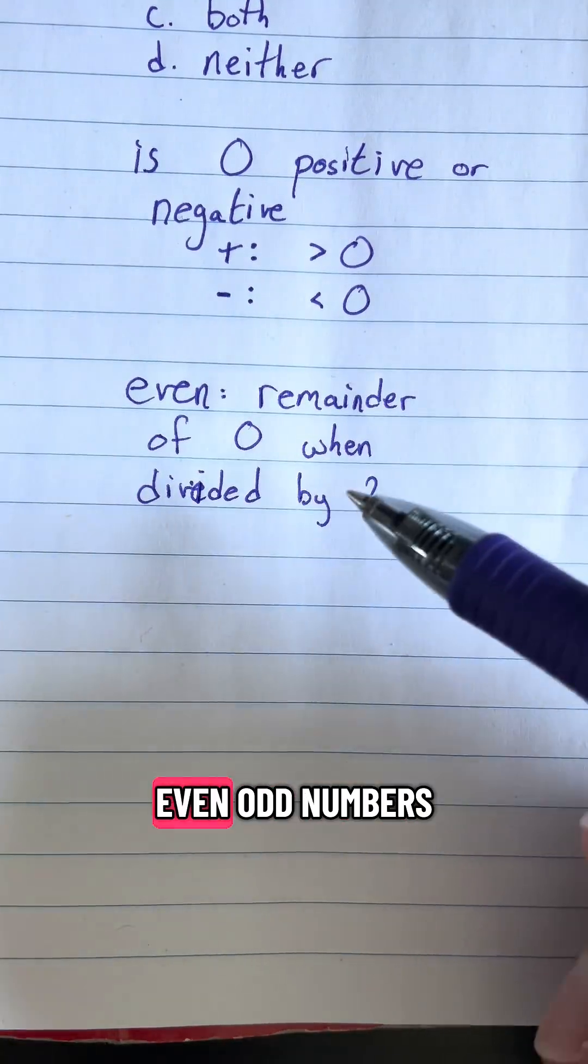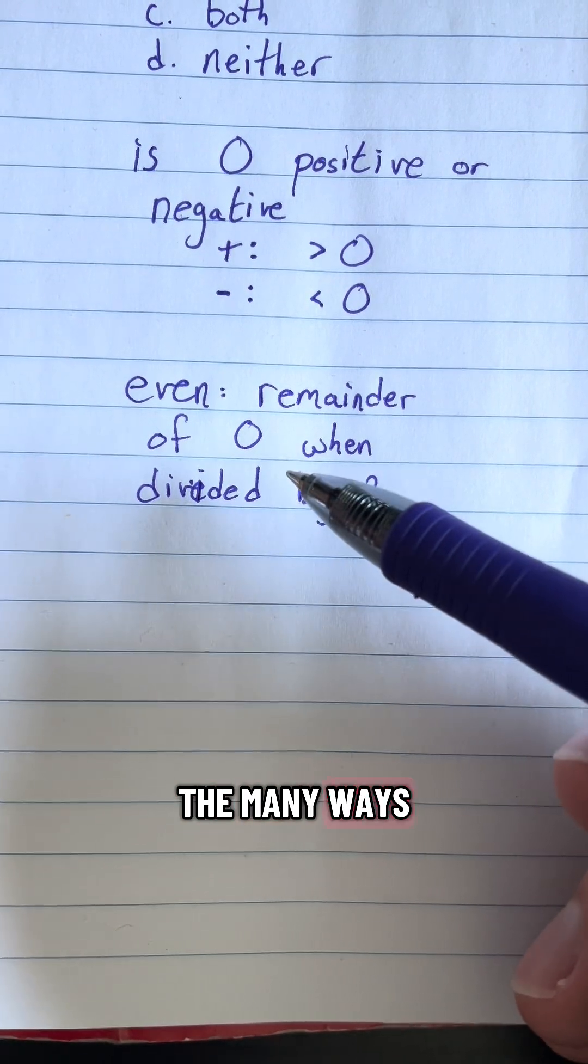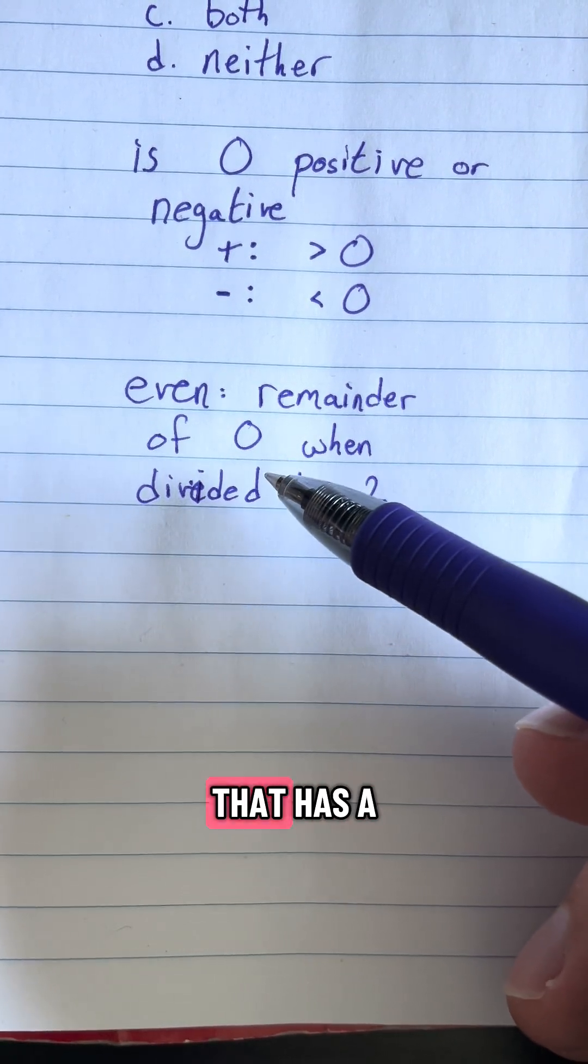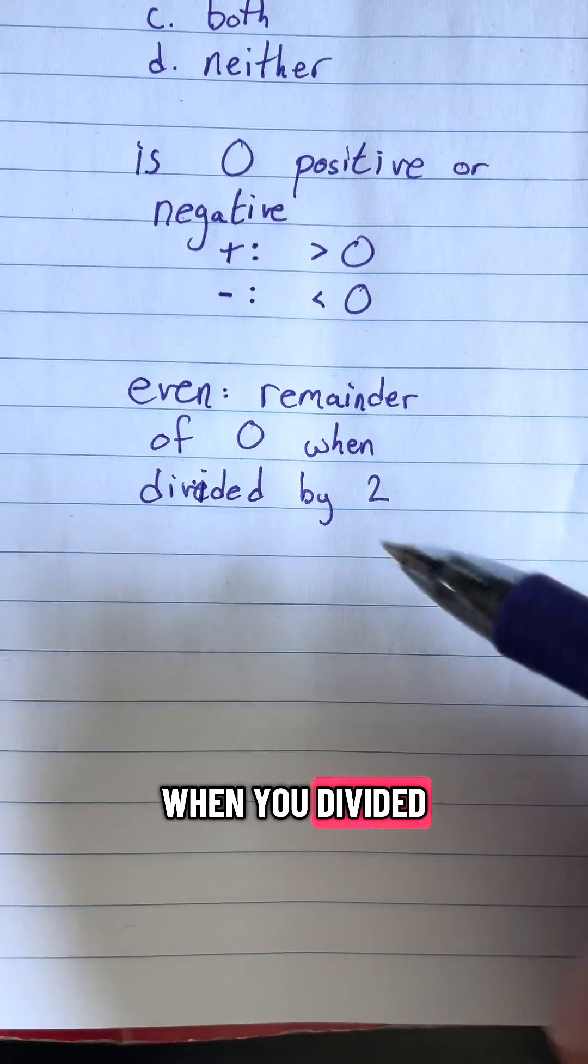This is not the case for even and odd numbers, because one of the many ways we could define an even number is a number that has a remainder of zero when you divide it by two.